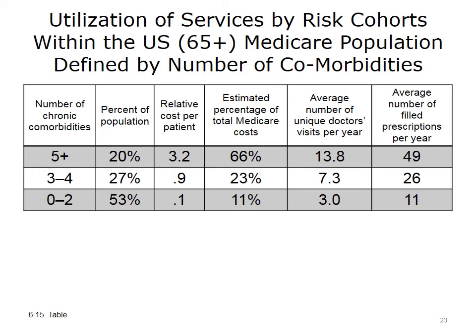Take your time looking at this table — some of the patterns are fairly profound and really give you a sense of the importance of risk segmentation. You will note that the top 20% of individuals account for 66% of Medicare's cost, and on average this top group sees 13.8 different doctors during the year and fills 49 separate pharmacy prescriptions. This simple analysis shows why we should all be very interested in risk segmentation when it comes both to individuals and populations — to help a patient in need and to move our health care system towards efficiency and effectiveness.